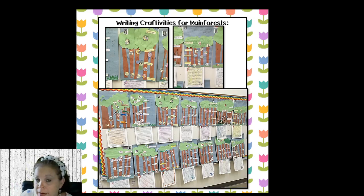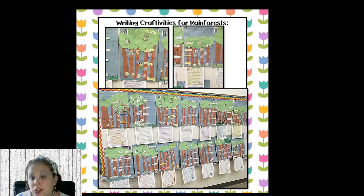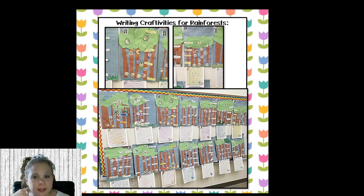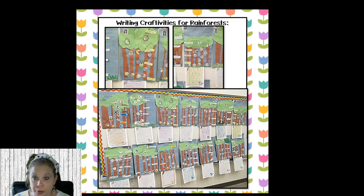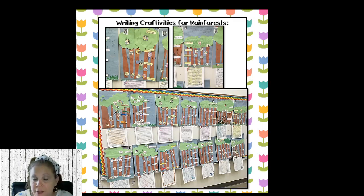This is one of the writing craftivities I love to do each year — we talk about the different layers of the rainforest. It's actually a persuasive writing craftivity. In first grade they have to know what persuasive means, so I take it one step further and have them write a letter to the people of the world about how they're going to save the rainforest and why we need to. They make this craftivity with the different layers of the rainforest and talk about different animals, habitats, ecosystems, how animals adapt, and life cycles.